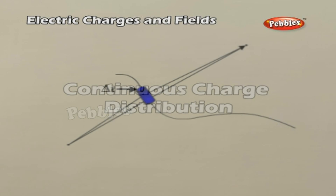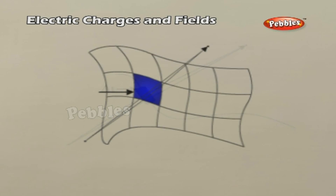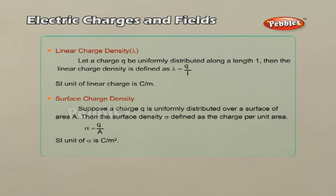Continuous Charge Distribution. A system of charges can be considered a continuous distribution if the charges are located very close together. To find the electric field due to a continuous charge distribution, we define the linear charge density lambda and the surface charge density sigma, as explained above.